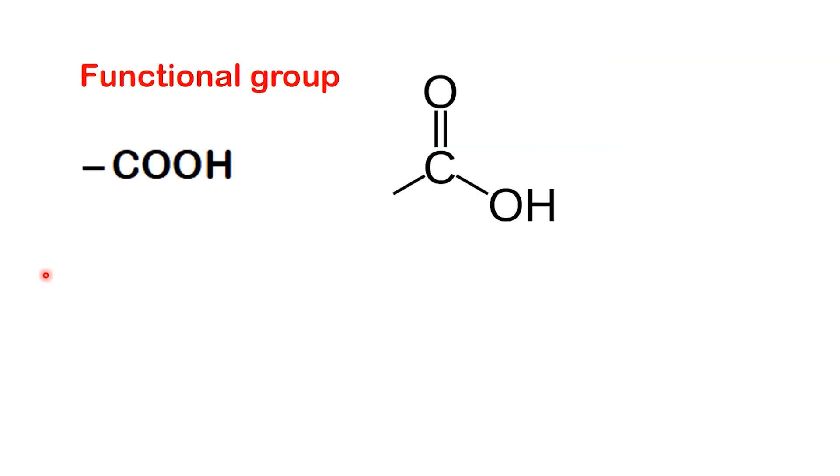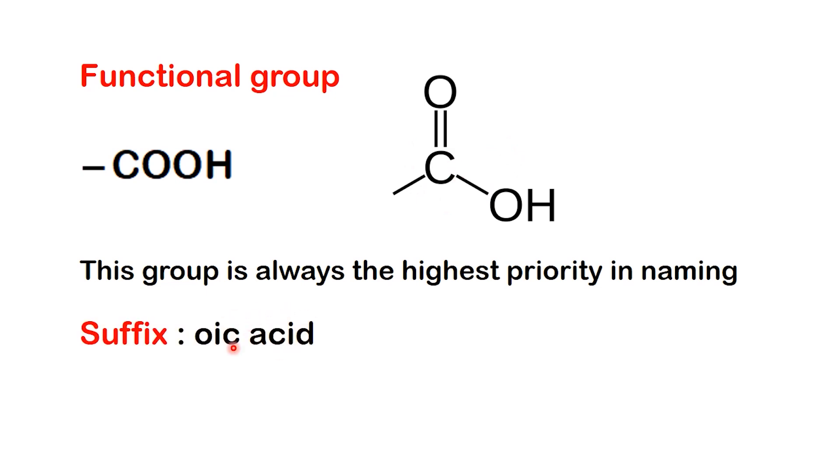Let's start with the basics. Carboxylic acids contain the functional group COOH. It's made up of a carbon double bonded to oxygen and bonded to a hydroxyl group. This group is always the highest priority in naming, which means it dictates the suffix of the compound. Whatever else is in the molecule, the COOH decides the ending of the name.